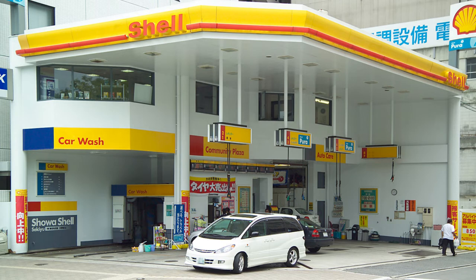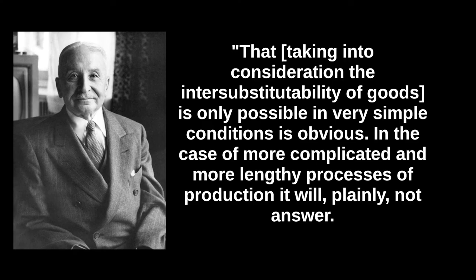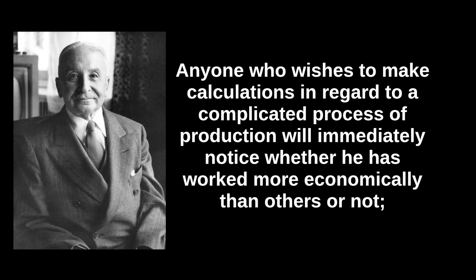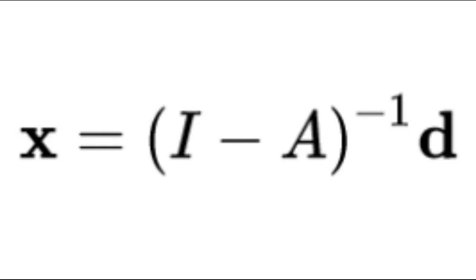On top of this, there is the problem of market manipulation. After a comparison to the fictional Robinson Crusoe, Mises claims that taking into consideration the inter-substitutability of goods is only possible in very simple conditions, and that anyone who wishes to make calculations about a complicated process of production will use exchange relations in the market to determine whether he has worked more economically than others. This is an admission by Mises that he doesn't know how to compute the effects on the economy of using some new productive process. But as I have shown on my blog, computing the material effects of new technology is relatively straightforward.